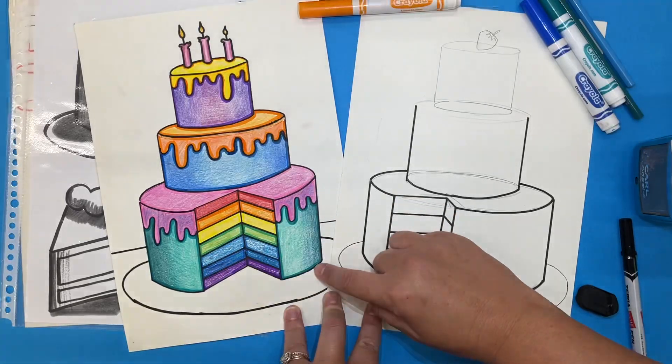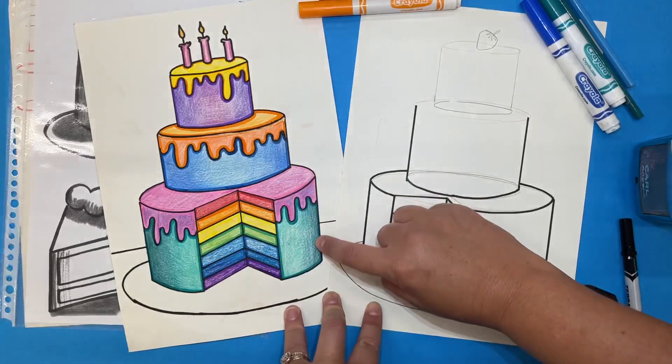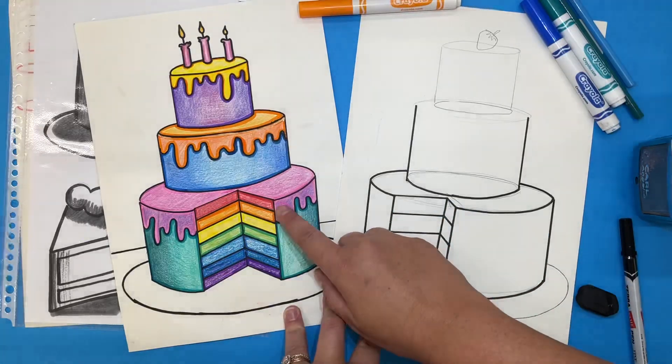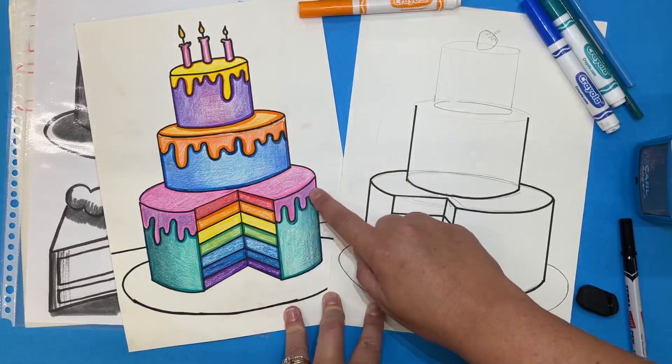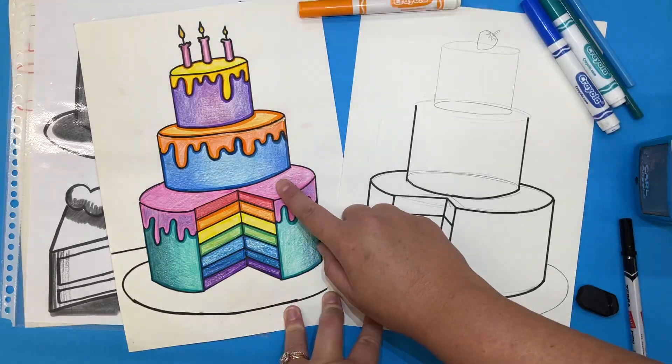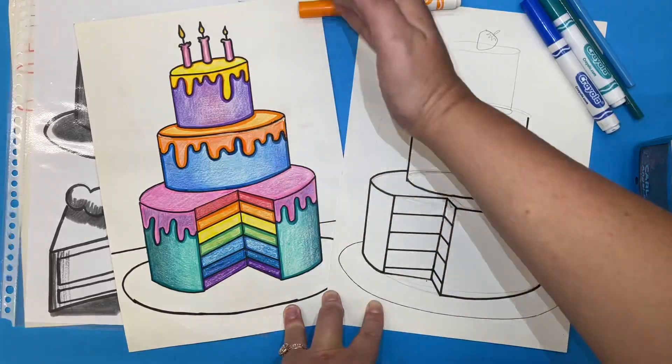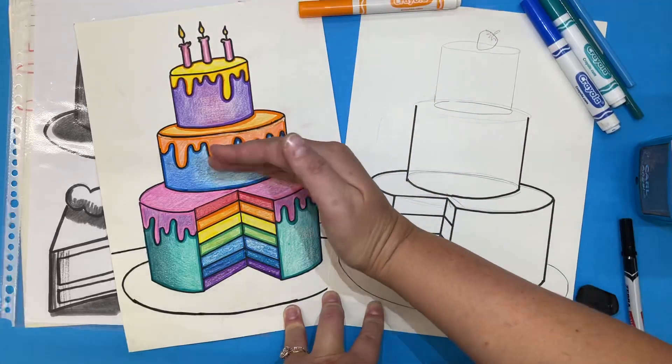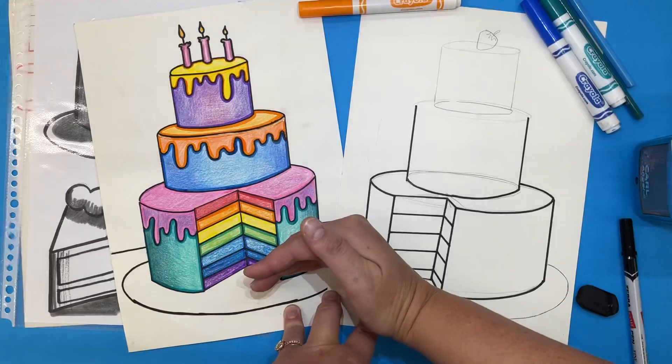You'll notice in this section it's dark along the edge and lighter as it goes in. My frosting is darker on the edge than it is on the top. This is important to help it look like there is light that is touching the cake and not getting to other places.